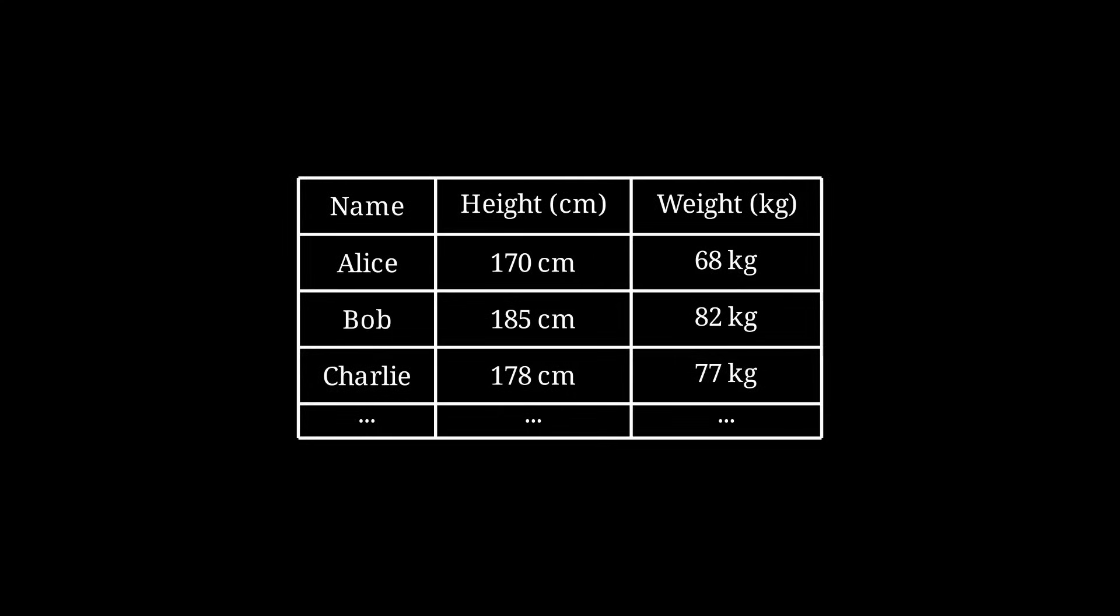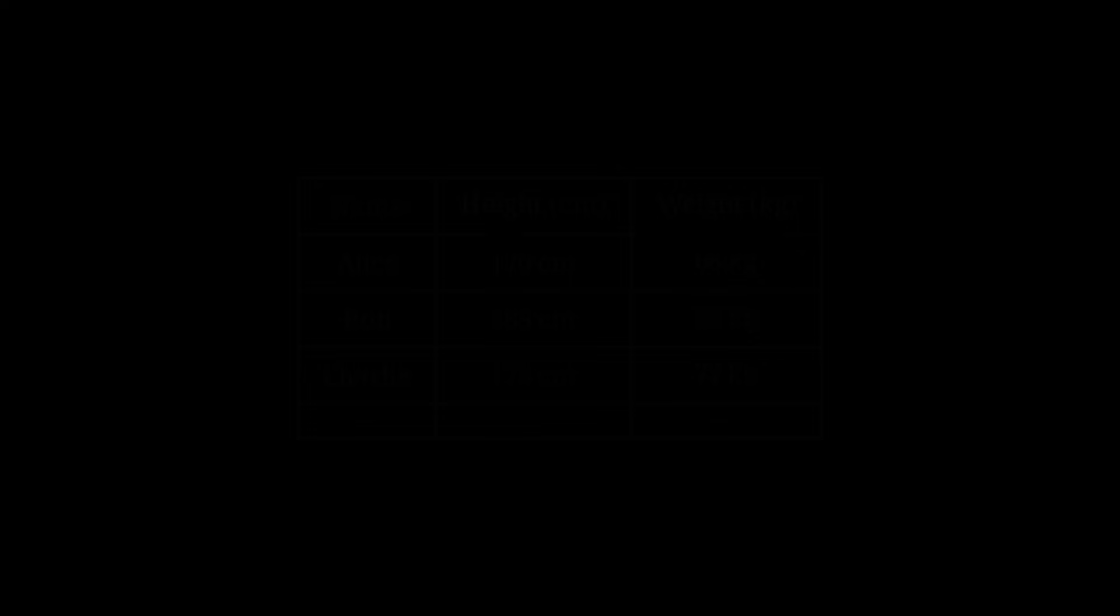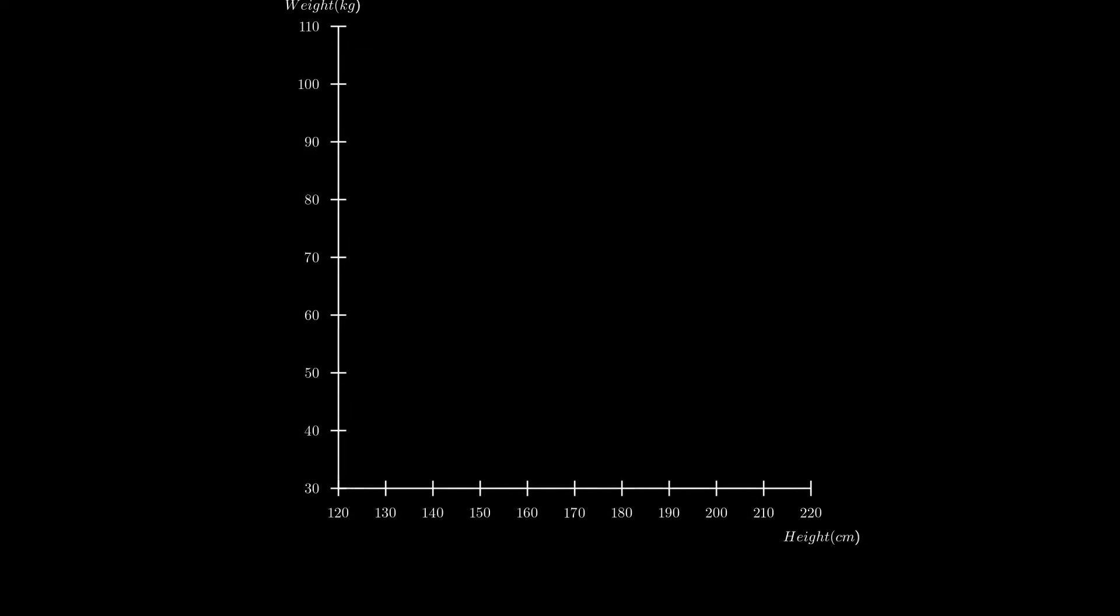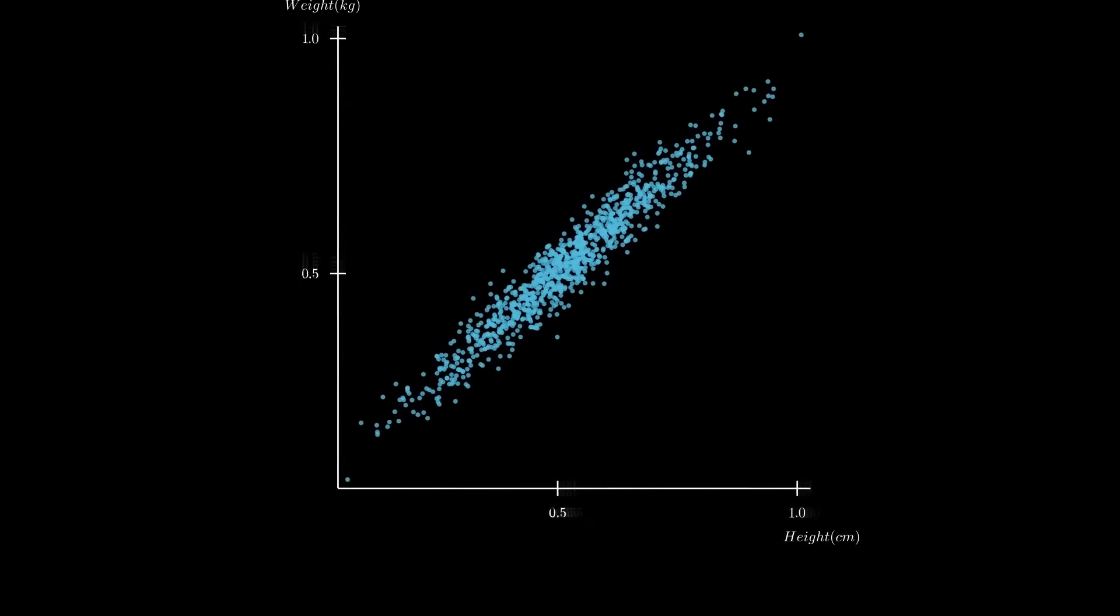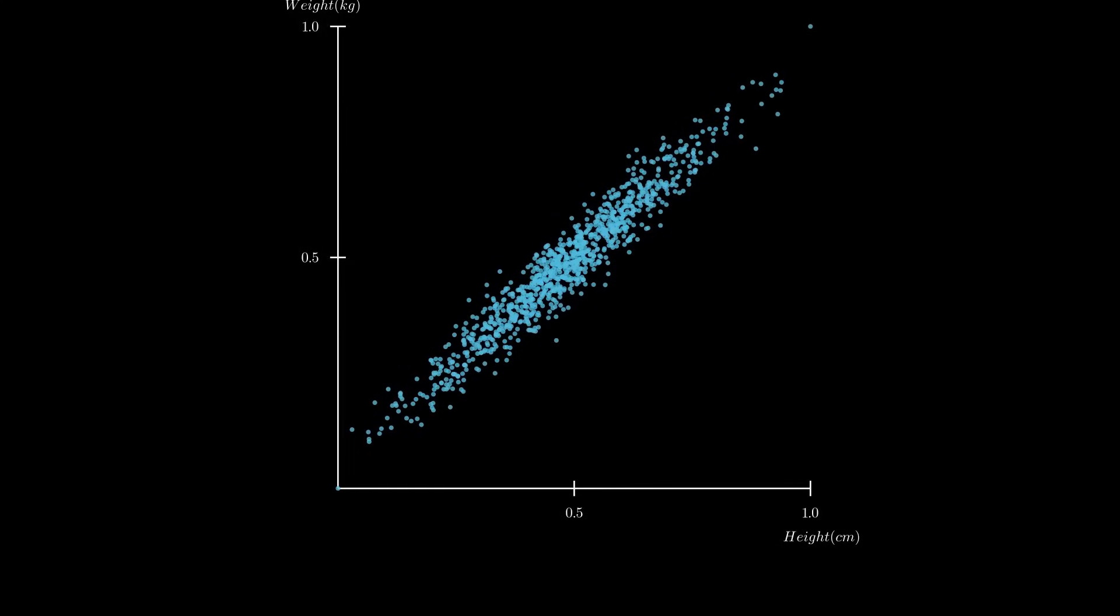First, let's talk about PCA, or principal component analysis. Imagine we have gathered data on the weight and height of a thousand people. We can plot this data on a 2D graph to observe how it is distributed, and additionally we can normalize the data to range from 0 to 1.